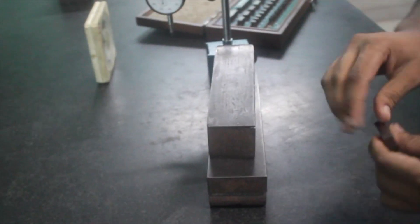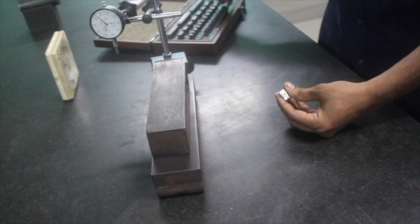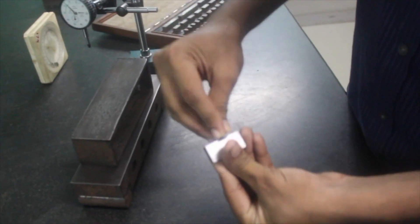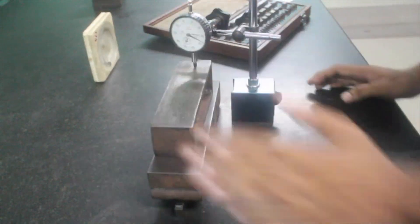Now we take this slip gauge out and take another slip gauge of 1.7 mm. We will wring it together and take it in the same position, and after that again we will set the initial value and check for flatness.